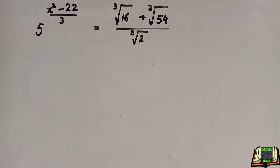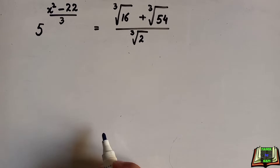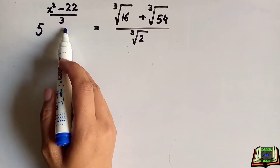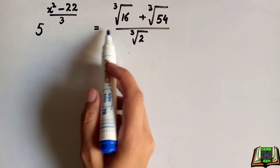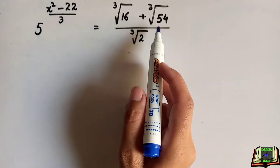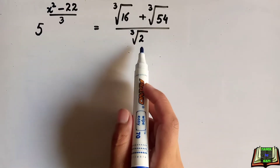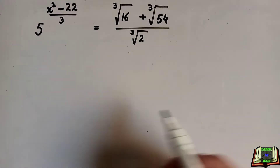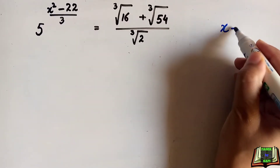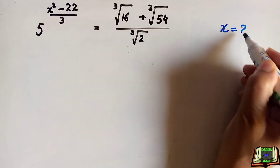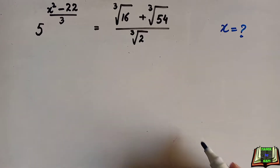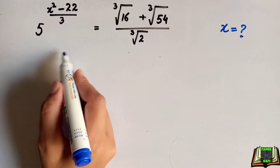Welcome back to RP's channel. In this video, we are going to solve 5 to the power x squared minus 22 divided by 3, equal to cube root of 16 plus cube root of 54 divided by cube root of 2. We have to find the value of x by evaluating this equation.